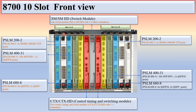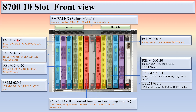In slots 1, 3, and 8, there is a PSLM 200-2 card. The capacity of this card is 200G and there are just two ports on this faceplate.